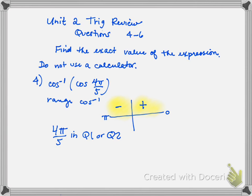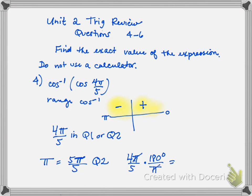4π/5 isn't really a familiar angle to us. You can do one of two things. You can check it because I know that π, if I find a common denominator of 5, is 5π/5. And 4π/5 is a little bit smaller than that, so I know that I'm in quadrant 2. The other thing you could do is change this into degrees — 180 degrees divided by π — and you get 144 degrees, which also confirms that we're in quadrant 2.